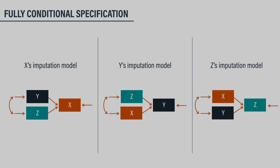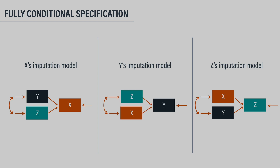Fully conditional specification, or FCS, was developed by Steph Van Buren. People often call this the MICE algorithm, which stands for multiple imputation by chained equations. FCS uses a sequence of regression models to fill in the data, one for each incomplete variable. This figure depicts the imputation models for three variables X, Y, and Z. There is no reference whatsoever to the ultimate analysis model here. Rather, every MCMC cycle uses a round-robin scheme where each incomplete variable is predicted by all others. X's imputations are created from a regression model with Y and Z as predictors; Y's imputations from a model with the filled-in X's and Z as predictors; and Z's imputations from a model with the filled-in X's and Y's as predictors.